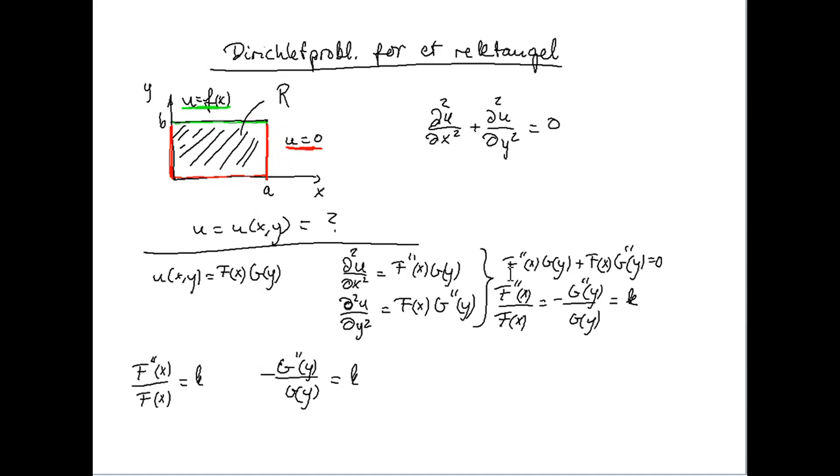And exactly as previously, we get that this function and this function must be a constant, because it's not possible for a function which is dependent of x to be equal to a function dependent on y, unless these functions are constant.